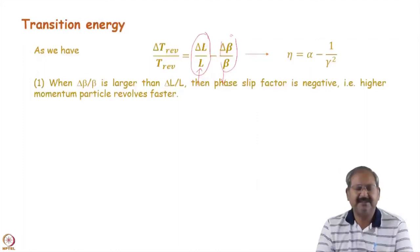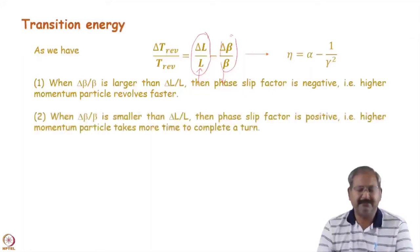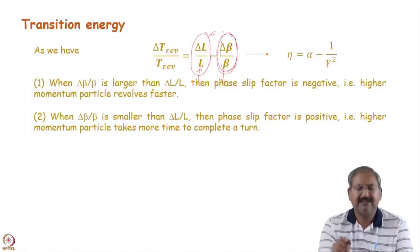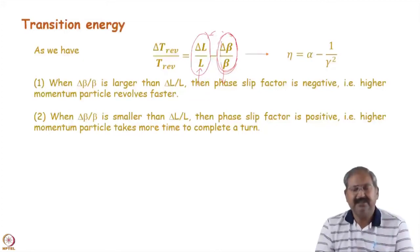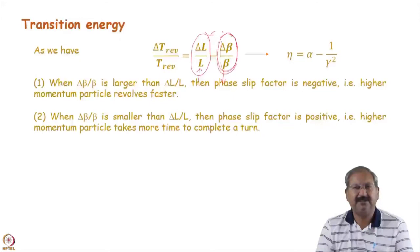In high energy machines, the frequency slip factor is generally positive. If the velocity-change term dominates, the frequency slip factor becomes negative — this occurs in the low energy region. For example, an 800 MeV or 1 GeV proton synchrotron operates in the low energy region (kinetic energy comparable to proton rest energy), so the frequency slip factor may be negative there.